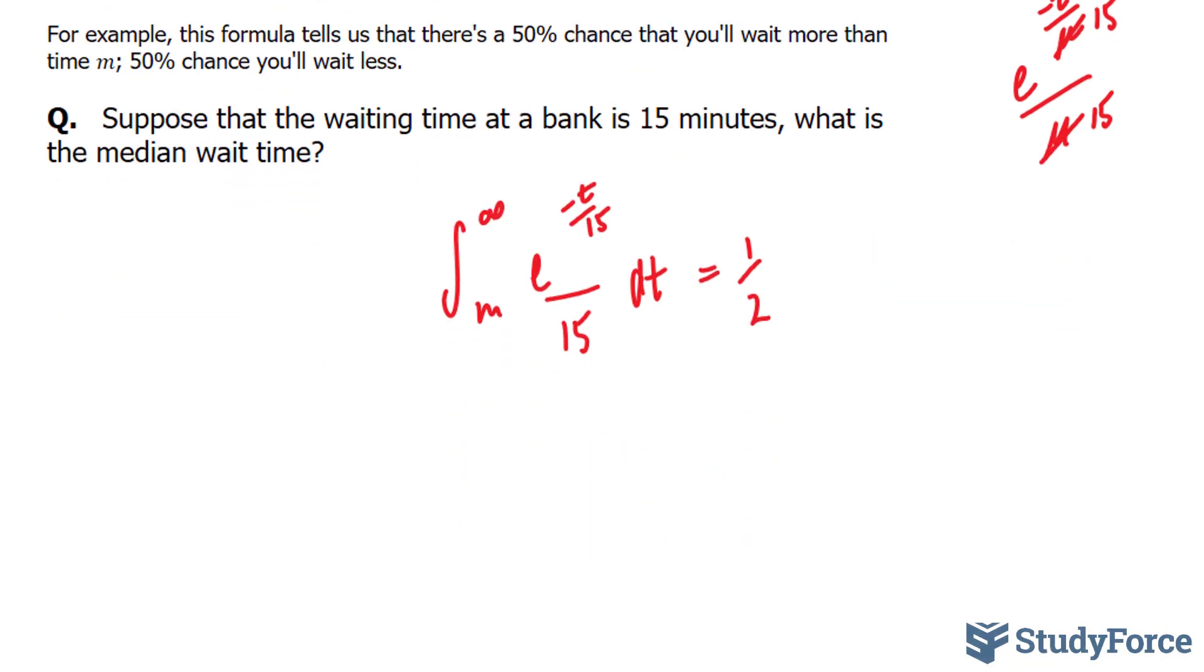So let's integrate this. We'll take out the 1 over 15 constant—that doesn't need to be integrated. We have 1 over 15 times the integral from m... And we can't integrate to an upper bound of infinity, so I'm going to replace infinity with a constant. Let's call it w.